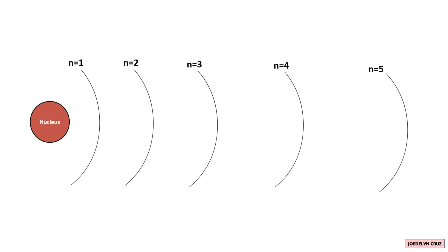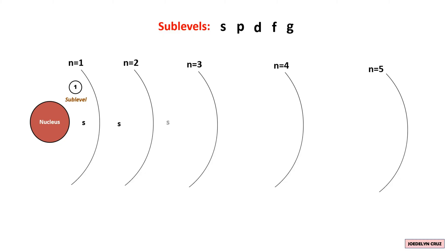As mentioned earlier, the sublevels are expressed as S, P, D, F, and G. In the first energy level, there is only one sublevel, which is S. The S sublevel is also present in the second, third, fourth, and fifth energy levels.